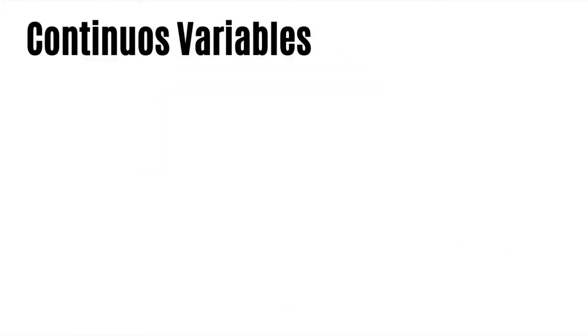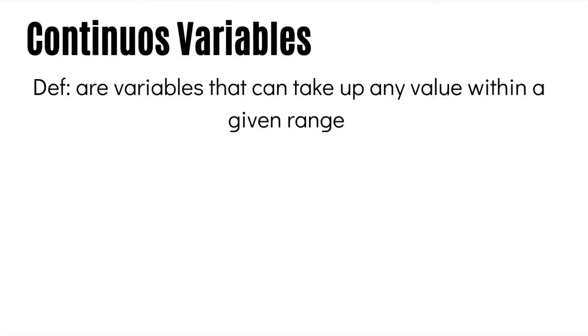Let's start by understanding what continuous variables are. Continuous variables are any variables that can take up any value within a given range — they do not have discrete jumps. Continuous variables are considered to be metric or quantitative variables where the variable can have an infinite number of values between two given points.